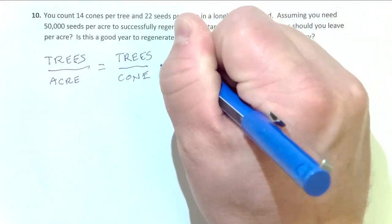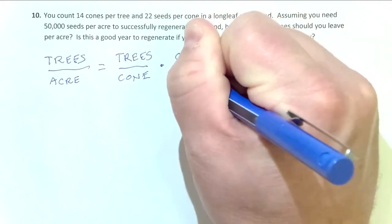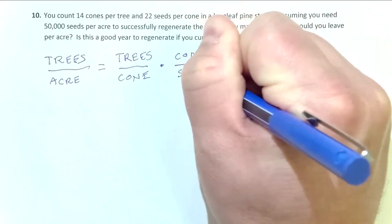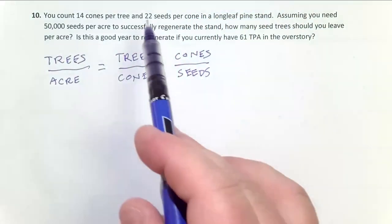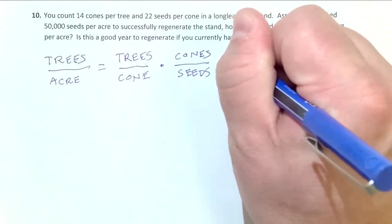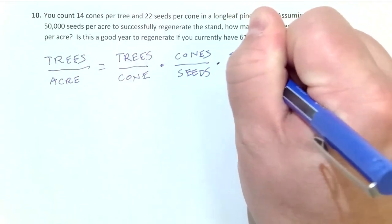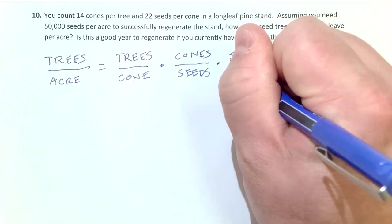Similarly, we need cones per seed — that again sounds backwards, but we know there are 22 seeds per cone, so we flip that to get 1 over 22. It's simply the inverse of seeds per cone. And finally, seeds per acre, which is more intuitive — we know we want 50,000.